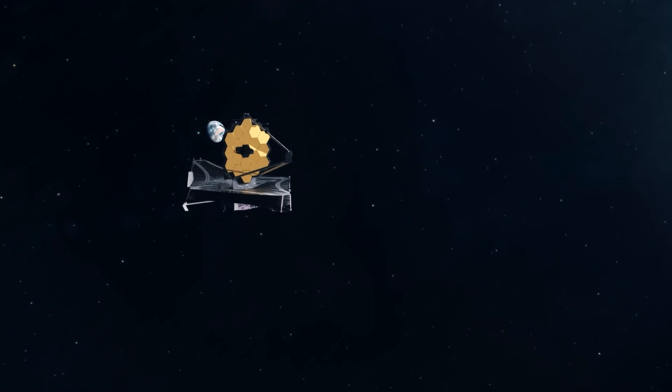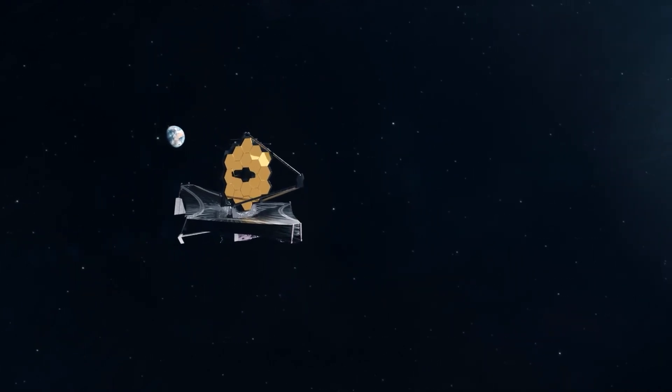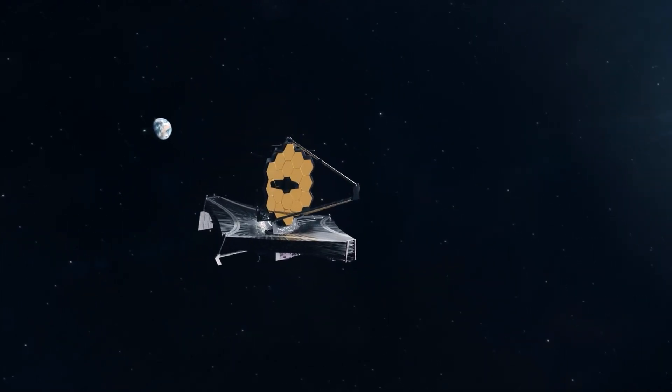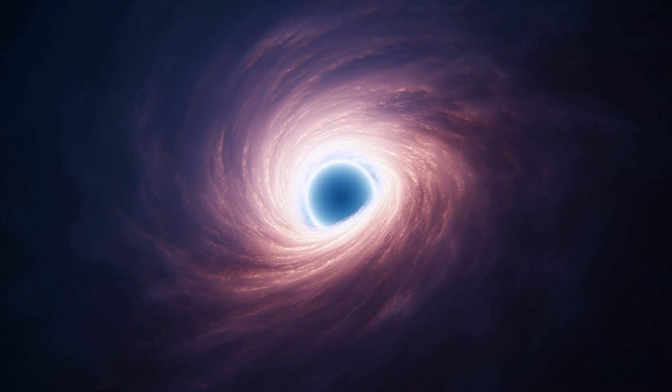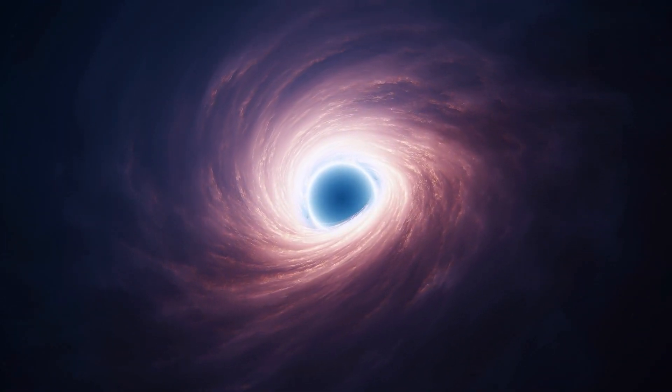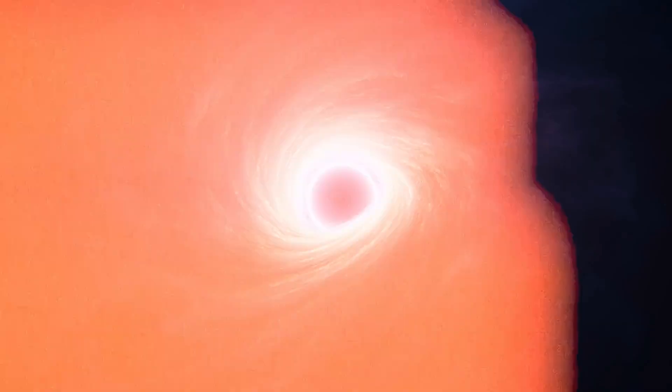But now comes the next bombshell. In addition to the impossible galaxies, James Webb also discovered six presumably very old black holes, which also existed only a few hundred million years after the Big Bang.